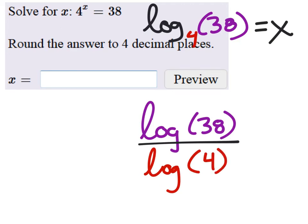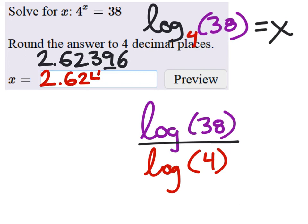And when we do that, my calculator gave me this number, but we only want 4 decimal places. 2.62396. 4 decimal places is the 9, which we're going to round up, which would give us, we're going to have to carry the 1 though, so 6240.